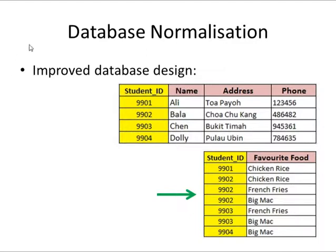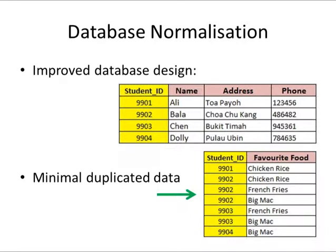We can actually improve the database design by simply breaking up the large database table into two smaller tables shown in this diagram. We have two tables: the table on the top with student ID and three columns — name, address, and phone — as well as a second table with the same student ID as the foreign key and the column for favorite food. With this design, we can minimize duplicated data, save storage space, and also improve data access speed because the database is smaller.